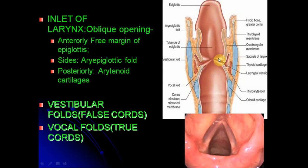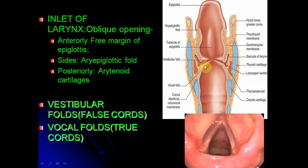The vestibular folds are two folds running anteroposteriorly across the laryngeal cavity. They contain a vestibular ligament and a few fibers of the thyroarytenoid muscle. The vocal cords are two pearly white structures running anteroposteriorly from the middle of the thyroid angle to the vocal process of the arytenoids. The vocal cords consist of a vocal ligament, which is the upper edge of the cricovocal membrane, and this is closely attached to the mucous membrane with only scanty sub-epithelial connective tissue present.